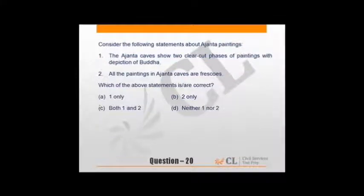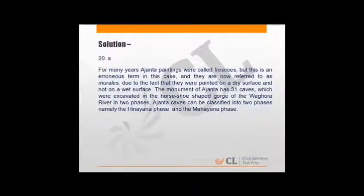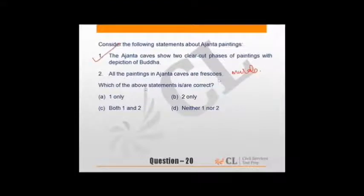Statements about Ajanta paintings. Ajanta caves show two clear-cut phases of paintings with depiction of Buddha - of course correct. All paintings in Ajanta caves are frescoes - not all, they are rather murals also. As explanation given on next page, for many years Ajanta paintings were called frescoes, but this is erroneous. They are now referred to as murals due to being painted on dry surface, not wet. The monument has 31 caves excavated in horseshoe-shaped gorge in two phases: Hinayana and Mahayana. Second option stands wrong. Read more about Ajanta and Ellora caves - often questions in UPSC papers.